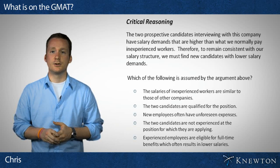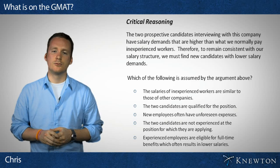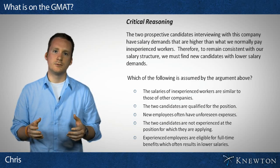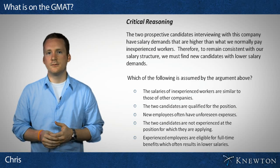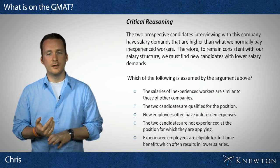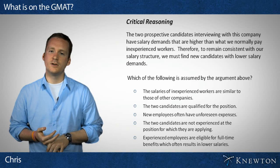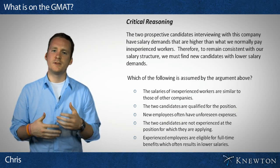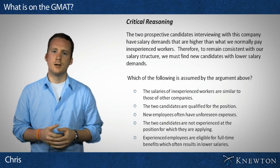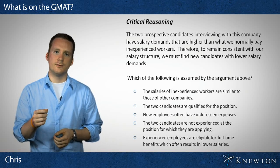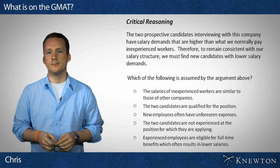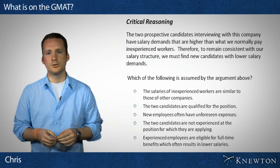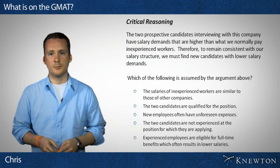The next question type is critical reasoning. You're given some sort of argument or evidence from an author's perspective, and then given a task — weaken the argument, identify flaws, strengthen the argument, and similar tasks that get at the heart of the argument's construction and structure. You're then given five multiple choice options in which to act upon that situation.